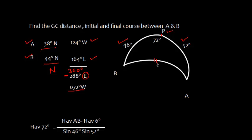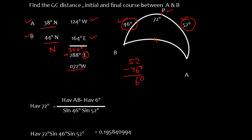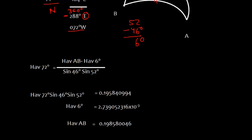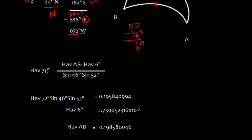Using the same haversine formula, haversine of this angle is equal to haversine of this side which is AB minus haversine of difference of this side which is 52 and 46, so 52 minus 46 which is 6 degrees, divided by sin 46 and sin 52.